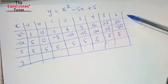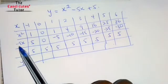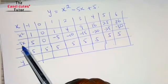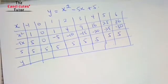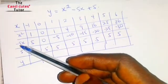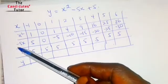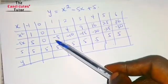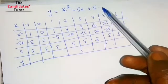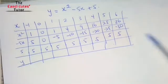Now multiply negative 5 by each x value. For x equals negative 1: negative 5 times negative 1 gives positive 5, because negative times negative becomes positive. You can use a calculator if you're unsure about signs. For x equals 0: negative 5 times 0 gives 0. For x equals 1: negative 5 times 1 gives negative 5, and so on completing the column.